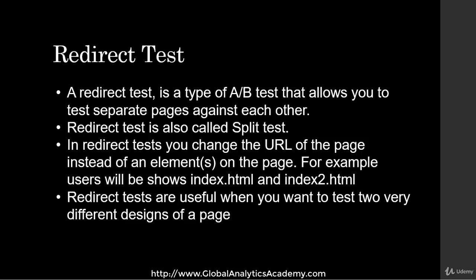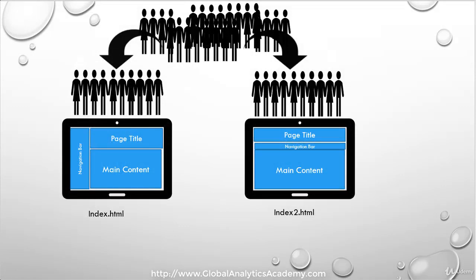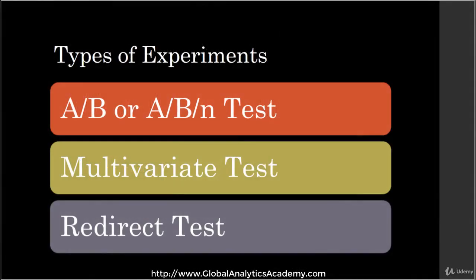The third type of experiment in Google Optimize is the Redirect Test. A Redirect Test is a type of A/B test that allows you to test separate pages against each other, also called a Split Test. In a Redirect Test, you change the URL of the page instead of elements on the page — you're sending users to two different URLs. For example, if you're testing a homepage, one group sees index.html and the variant could be index2.html. Redirect Tests are useful when you want to test two very different designs of a page. We will create all these experiments in the next few lectures.